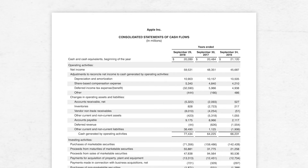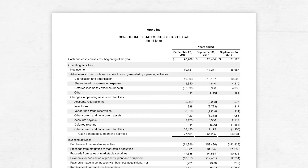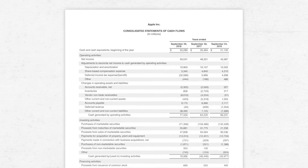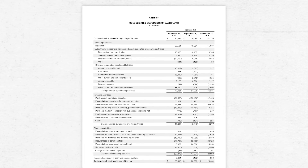In Apple's 10K, they call it the consolidated statements of cash flows. We're dealing in millions of dollars, and what we have here are the numbers for 2018, 2017, and 2016. So for starters, there are three parts to every cash flow statement.